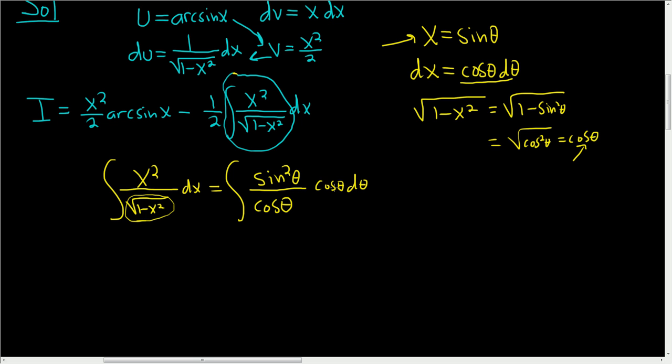Let's keep going. This is equal to the integral of sine squared theta, and to integrate sine squared, we use an identity. So this is equal to the integral of 1 half, and it's 1 minus cosine 2 theta. That's what sine squared theta is equal to, d theta.